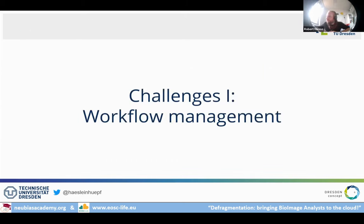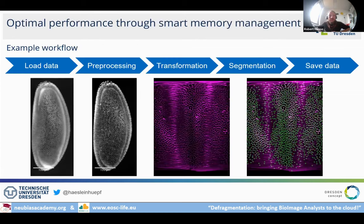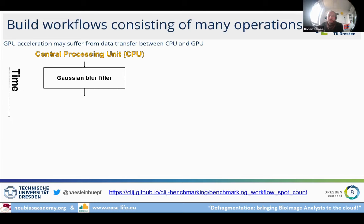One of the first challenges is workflow management. As an example workflow: we have a Drosophila embryo, a 3D light sheet dataset of one to two hundred megabytes per time point. We do background subtraction for pre-processing, then a transformation to unwrap the embryo, then segmentation, visualization, and saving the result. This is visualized top to bottom. If you do a Gaussian blur filter, it takes so long.